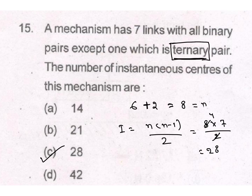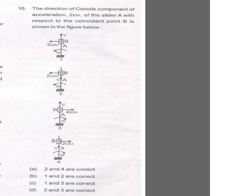The direction of the Coriolis component 2ωv of the slider A with respect to the coincident point B is shown in the figure. In option 1, v is upward and omega is counterclockwise, so the Coriolis component is leftward — option 1 is correct.